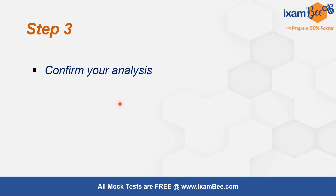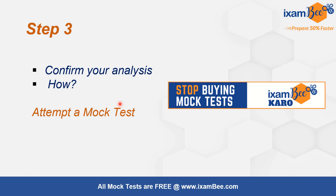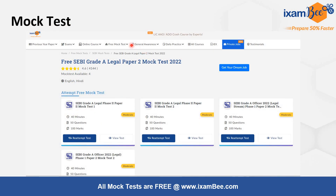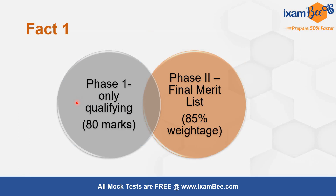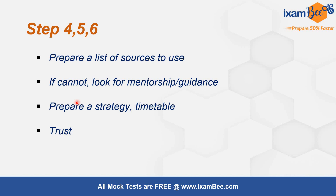Now you need to confirm your analysis — that is Step 3. To confirm your analysis, you should attempt a mock test. At iXamBee we provide free mock tests; you can find them on our website under the free mock test tab for all papers. Attempt a mock test, analyze your score, and check whether the areas you considered strengths were you actually able to attempt correctly, and how weak your weak areas really are. Remember, Phase 1 is only qualifying — you need 80 marks out of 200 for both papers combined, while Phase 2 marks carry 85 percent weight.